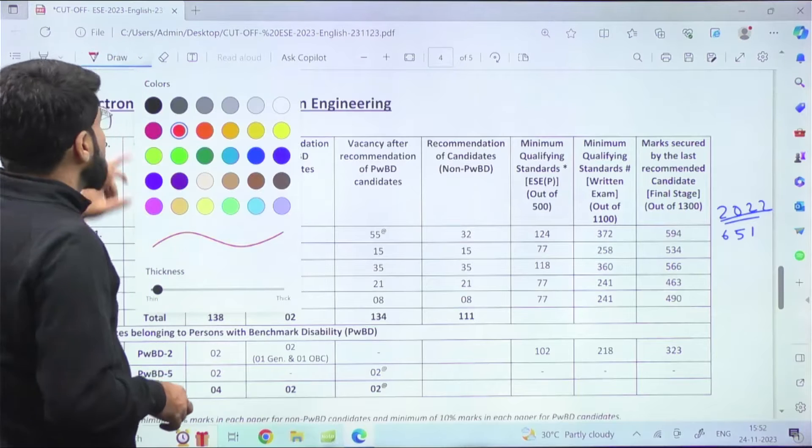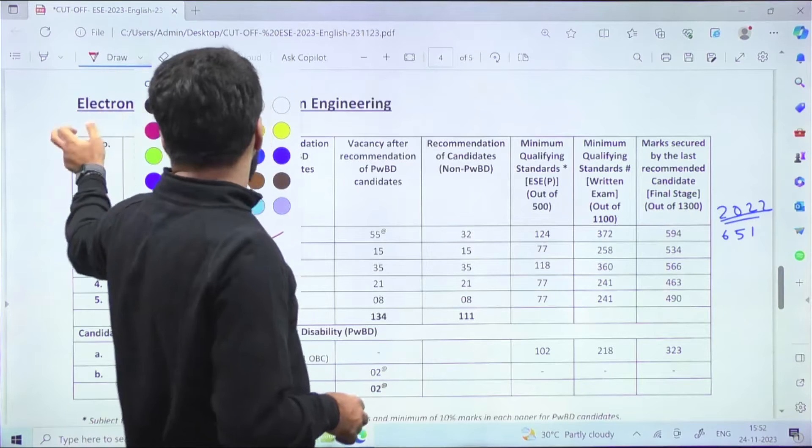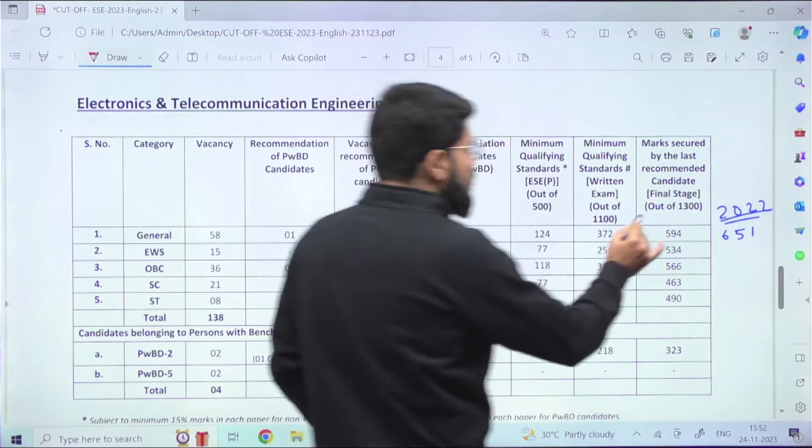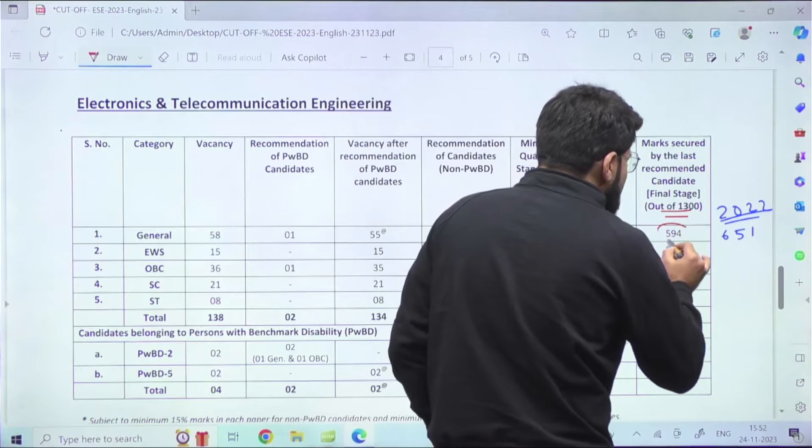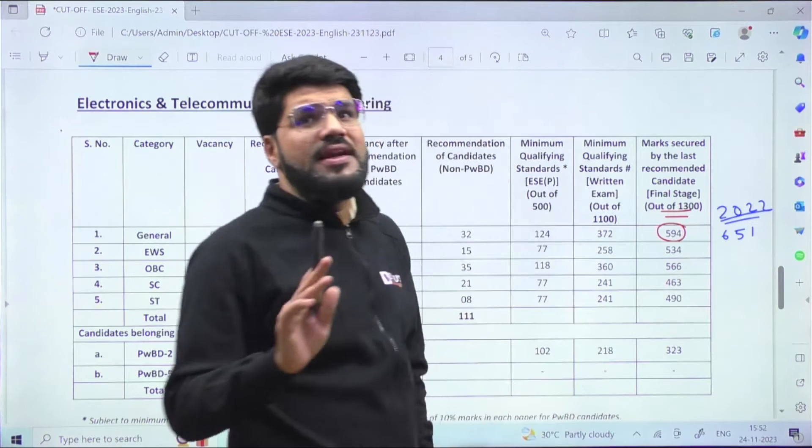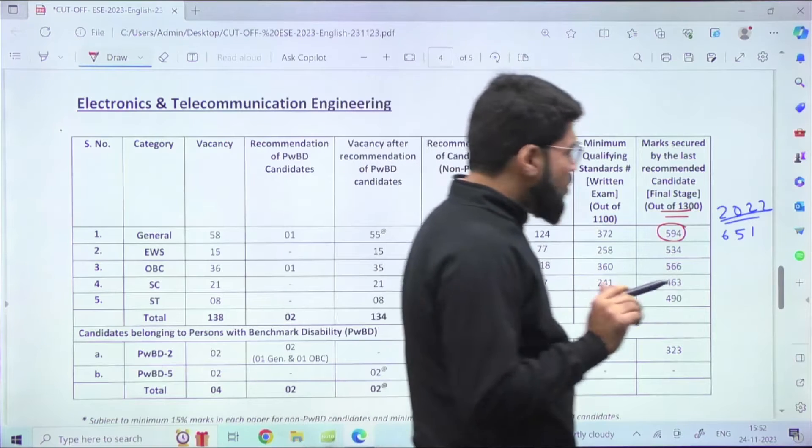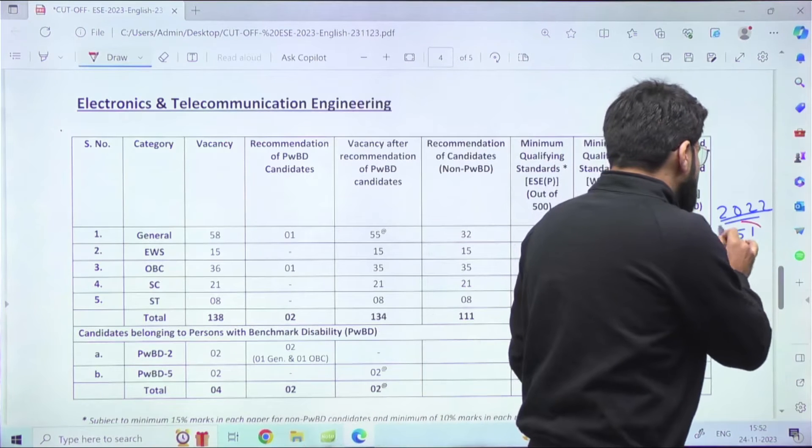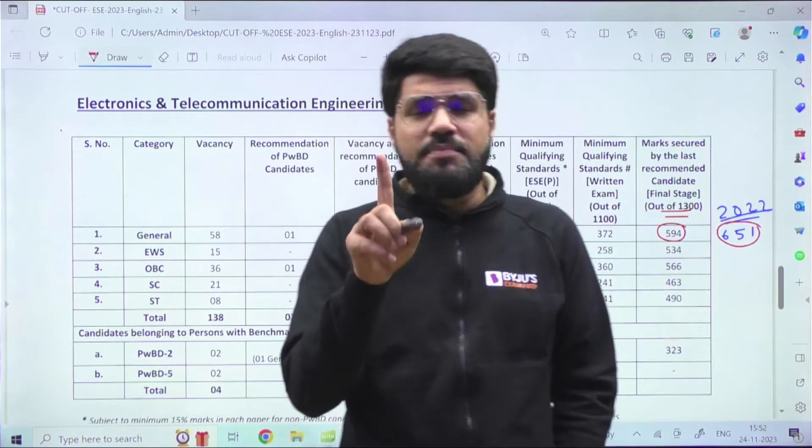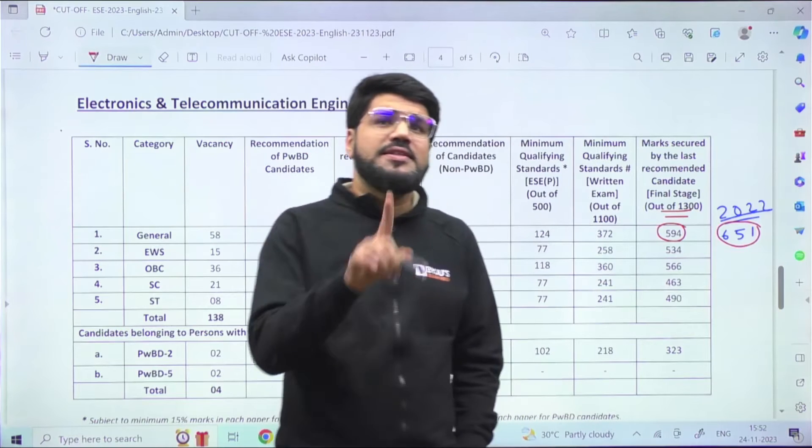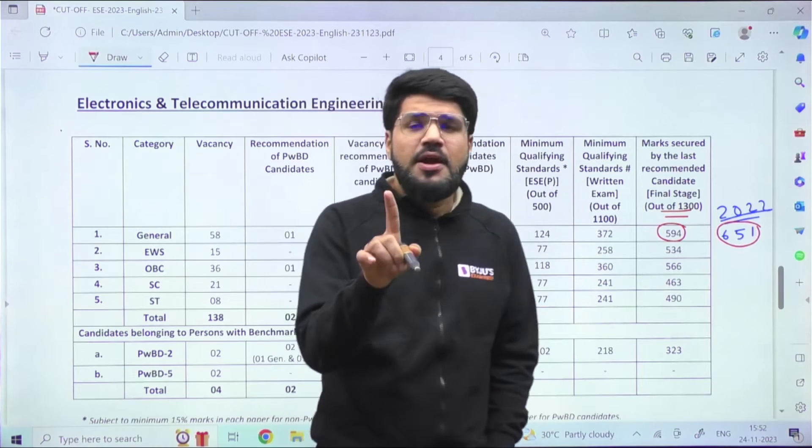First, looking into Electronics and Telecommunication - out of 1300, the cutoff is 594 only, which is less than 50 percent. Whereas last year it was 651. This year, the vacancies for electronics and telecommunication were suddenly increased.